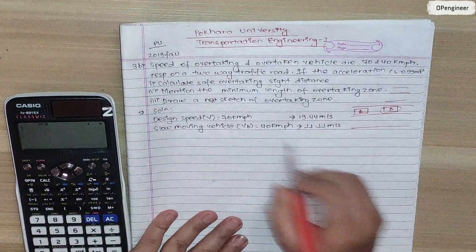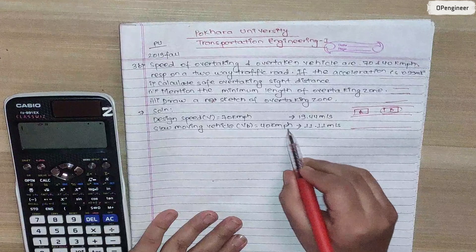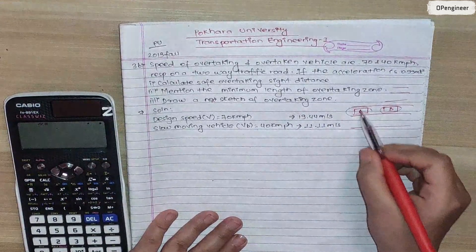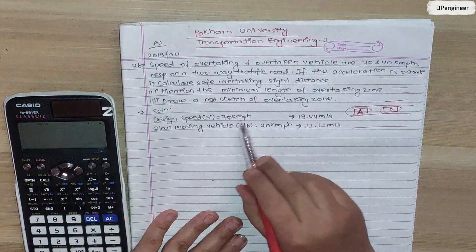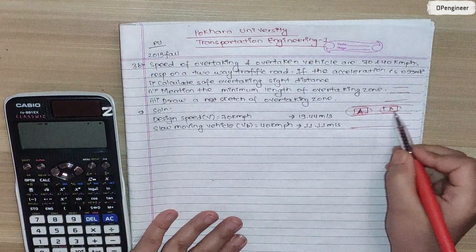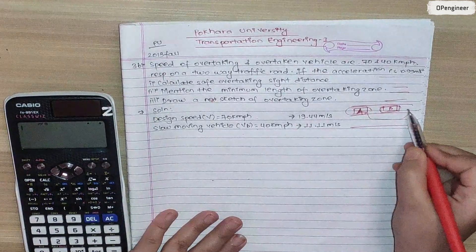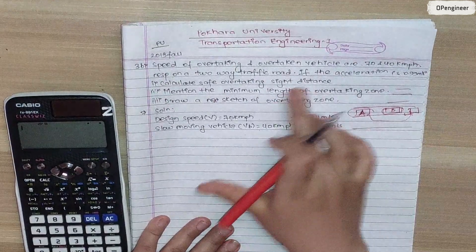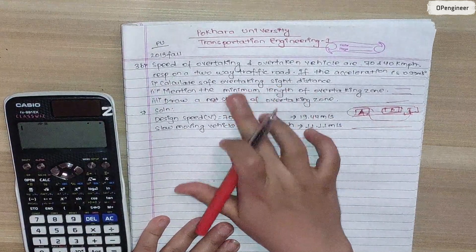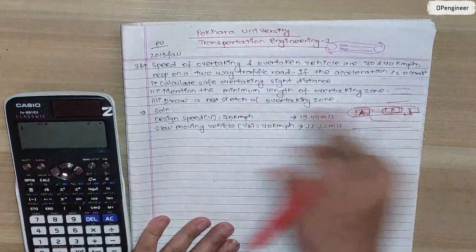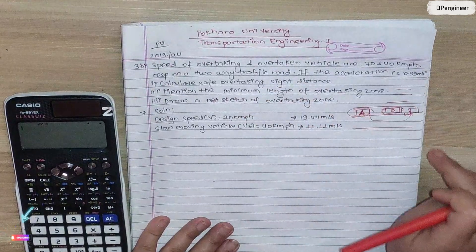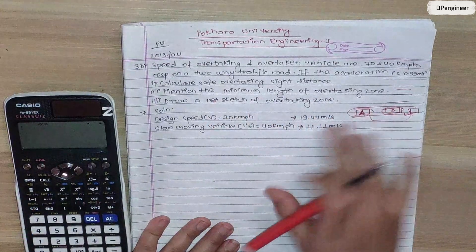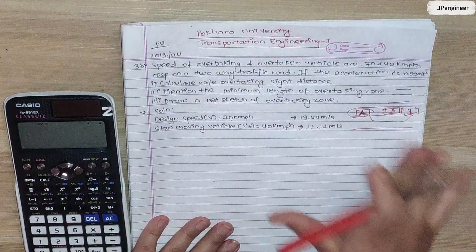This is the slow-moving vehicle at 40 km per hour, and the overtaking vehicle is at 70 km per hour. So this question involves the calculation of overtaking side distance and the minimum length of the overtaking zone.